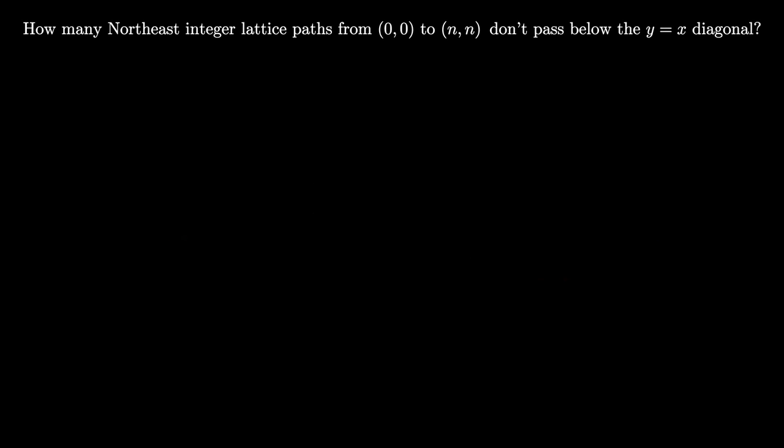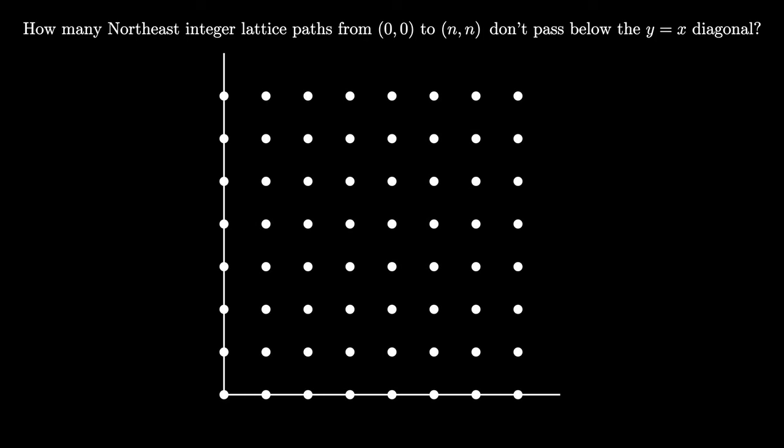Suppose we want to walk from the point (0,0) to the point (n,n), only traveling north and east and not passing below the diagonal y = x. This problem consists of counting what are called northeast integer lattice paths, and they look like this.